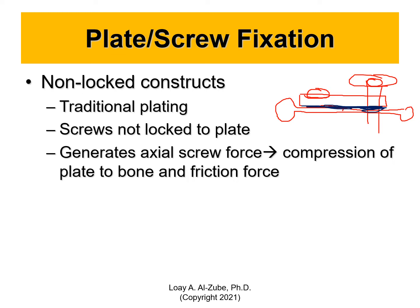So you have compression force and friction force, and those are things you don't want to have — especially if you have someone with osteoporosis or diabetes, because their bone is weak. You don't want to squash on the bone, or if it's cancellous bone. Non-locked constructs are usually used for people who have healthy bone where we care about the axial force to the bone.